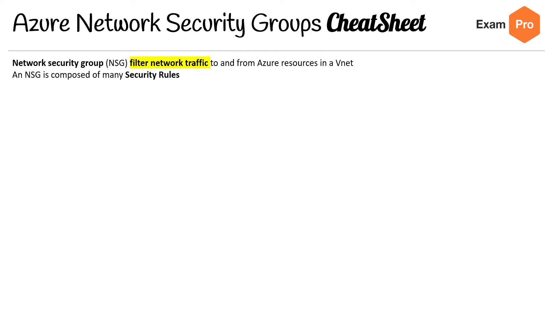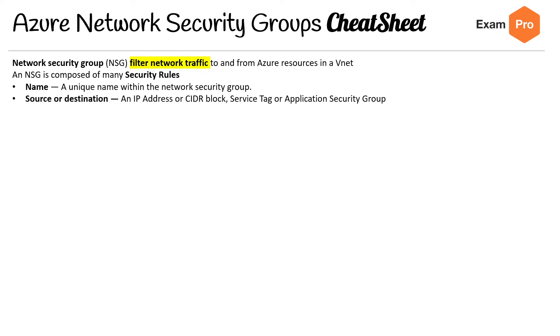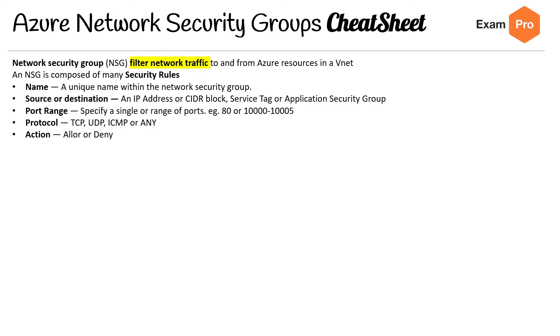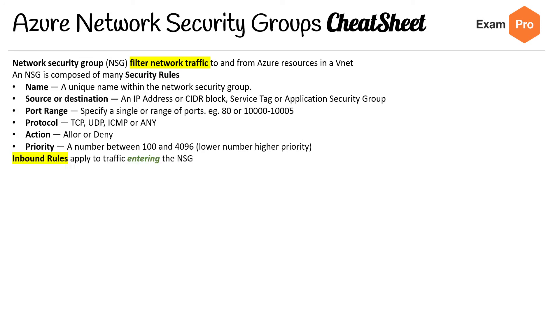An NSG is composed of many security rules. Each rule has a name, a source and destination, a port range, a protocol, and an action with a priority.